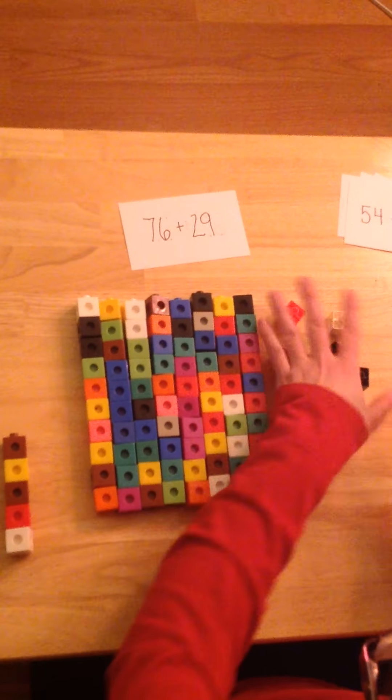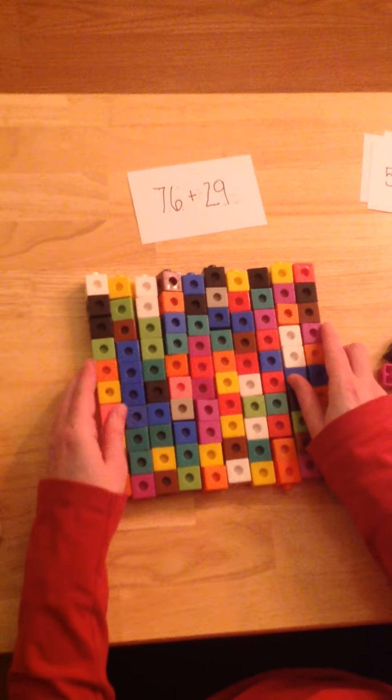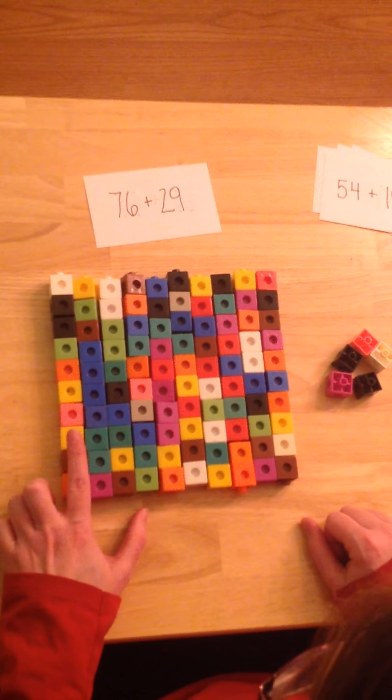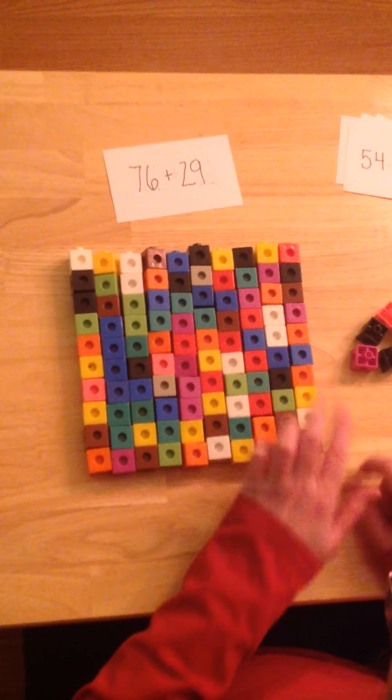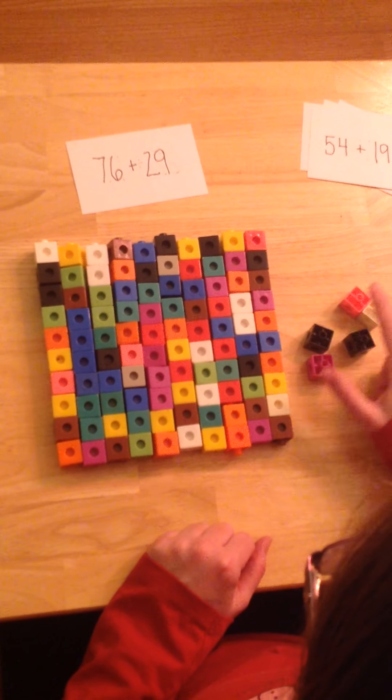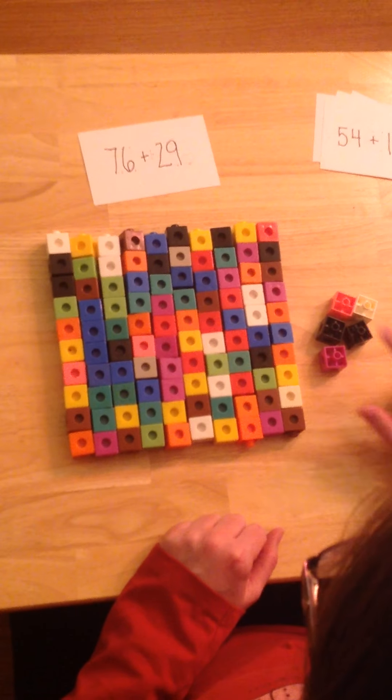I'm going to put these together and make a new 10. And I'm going to put my 10s together and these will be my leftover ones. 76 plus 29 is 10, 20, 30, 40, 50, 60, 70, 80, 90, 100, 101, 102, 103, 104, 105.